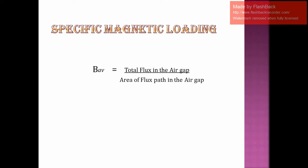Mathematically, total flux in the air gap divided by the area of the flux path in the air gap gives us the average value of flux density. In equation form, it is derived as the product of P and φ — that is our total magnetic loading — divided by πDL, where DL represents our main dimensions.